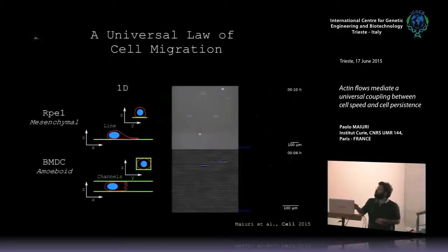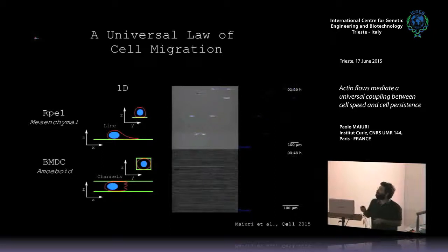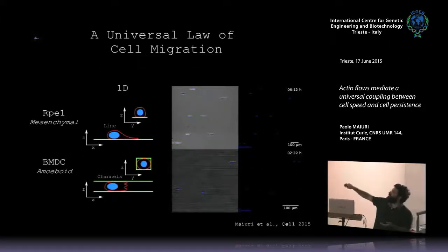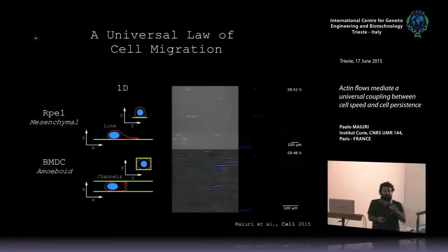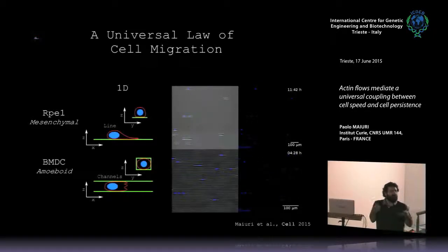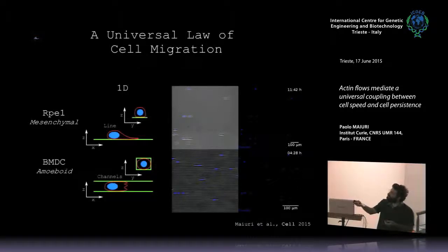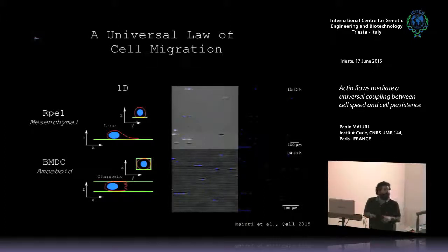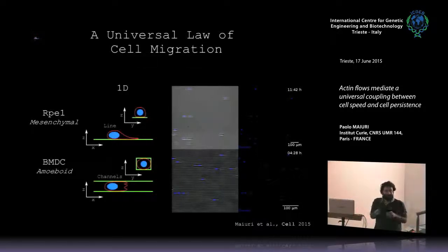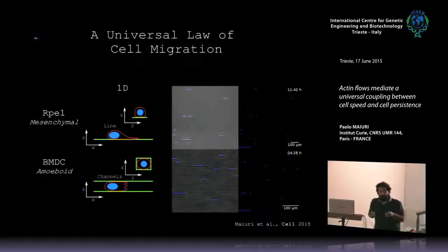We chose two cell types: RP1 cells and bone marrow dendritic cells, which are kind of prototypes of the two main kinds of cell locomotion — mesenchymal cells and amoeboid cells. Mesenchymal cells move based on adhesion: they protrude, they attach, and then they move. The dendritic cells are amoeboid-like — they move like an amoeba, squeezing their cell body. One is based on actin polymerization and the other on myosin contraction, where you contract the back and protrude the front.